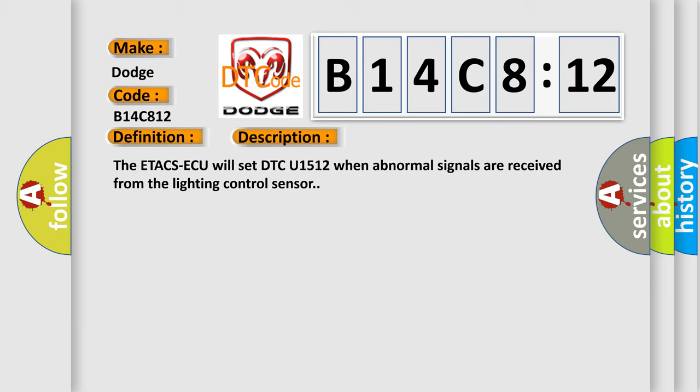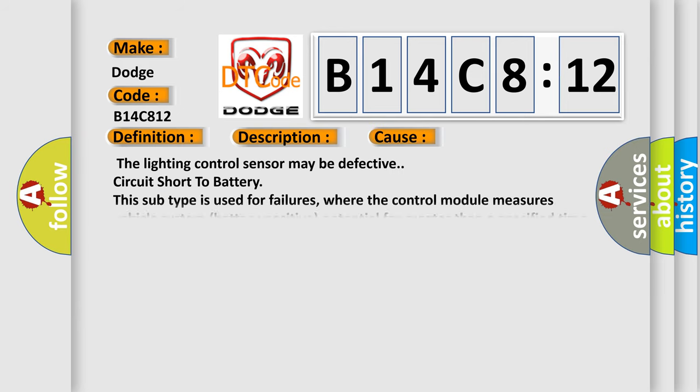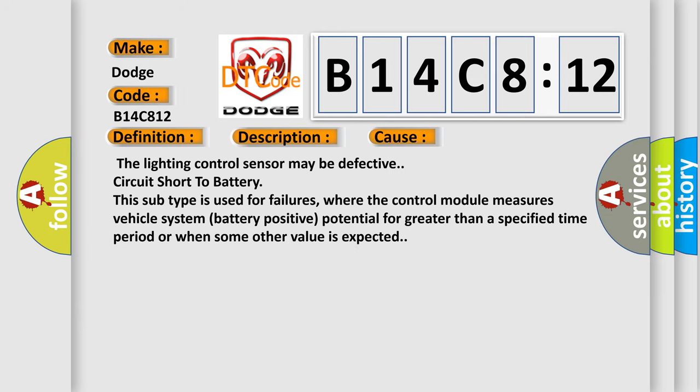This diagnostic error occurs most often in these cases. The lighting control sensor may be defective with a circuit short to battery. This subtype is used for failures where the control module measures vehicle system battery positive potential for greater than a specified time period or when some other value is expected.